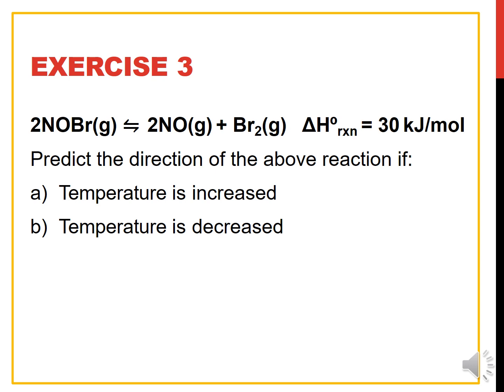For the exercise, you are given an equation with ΔH. Predict the direction of the reaction if temperature is increased or decreased. Look at the sign of ΔH — it is positive, meaning it is an endothermic reaction. Since it is endothermic, if the temperature is increased, the reaction will go in the forward direction — to the right.